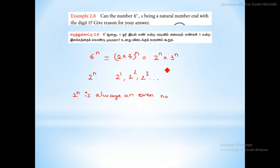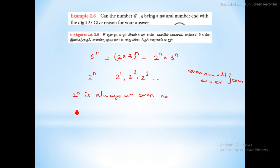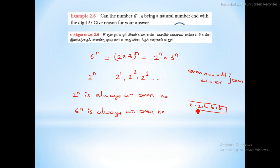If we multiply by an even number, the result is also an even number — even into odd or even into even, multiplying by 2 gives an even number. So 6 power n is always an even number. For an even number, we know the last digit is 0, 2, 4, 6, or 8.